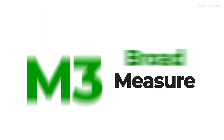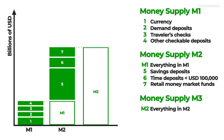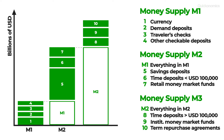M3 is the broadest measure. It includes everything in M2 as well as time deposits larger than $100,000, institutional money market funds and term repurchase agreements. It is considered the broadest and least liquid measure of money supply.